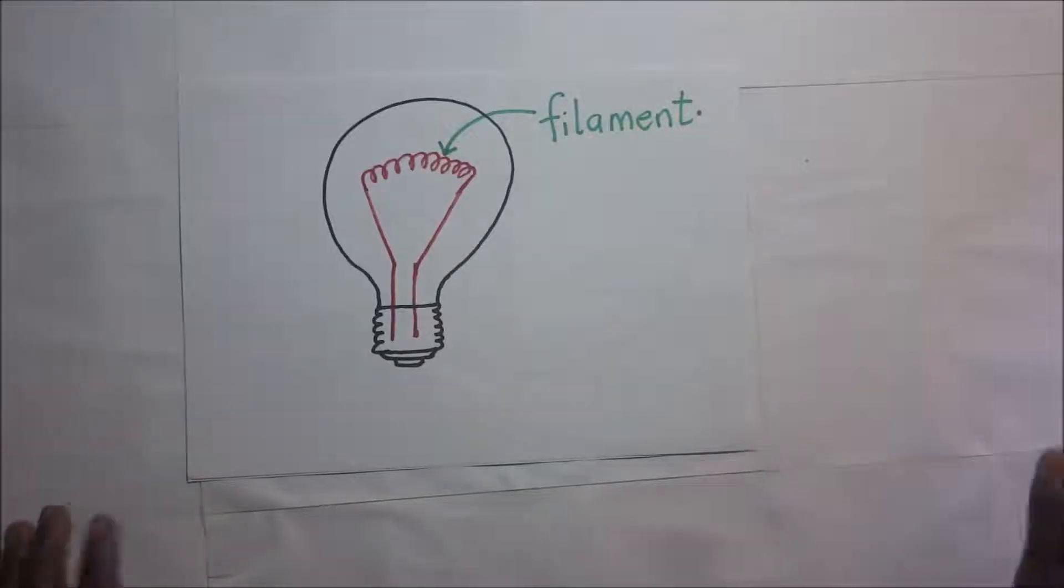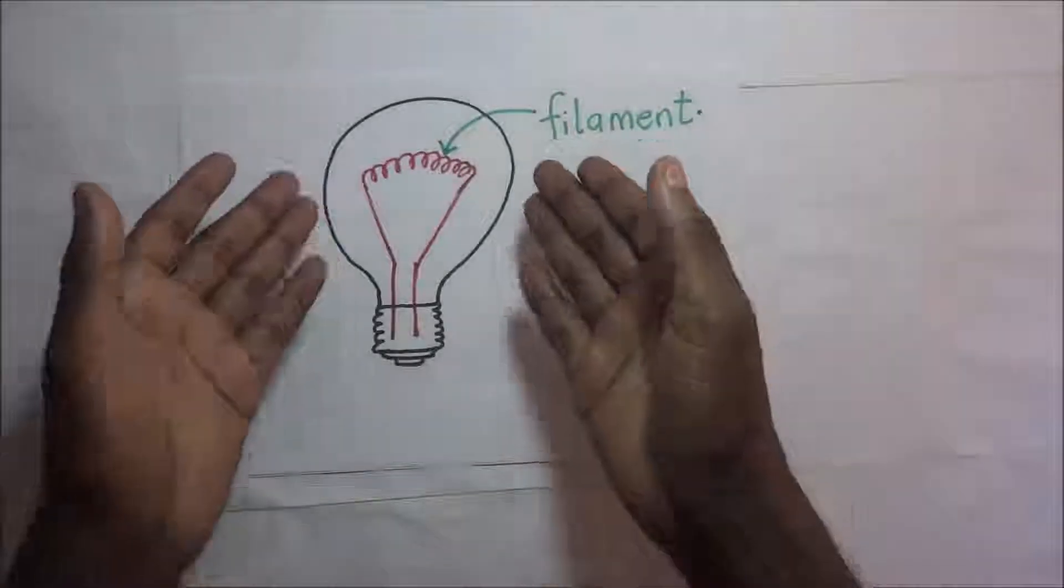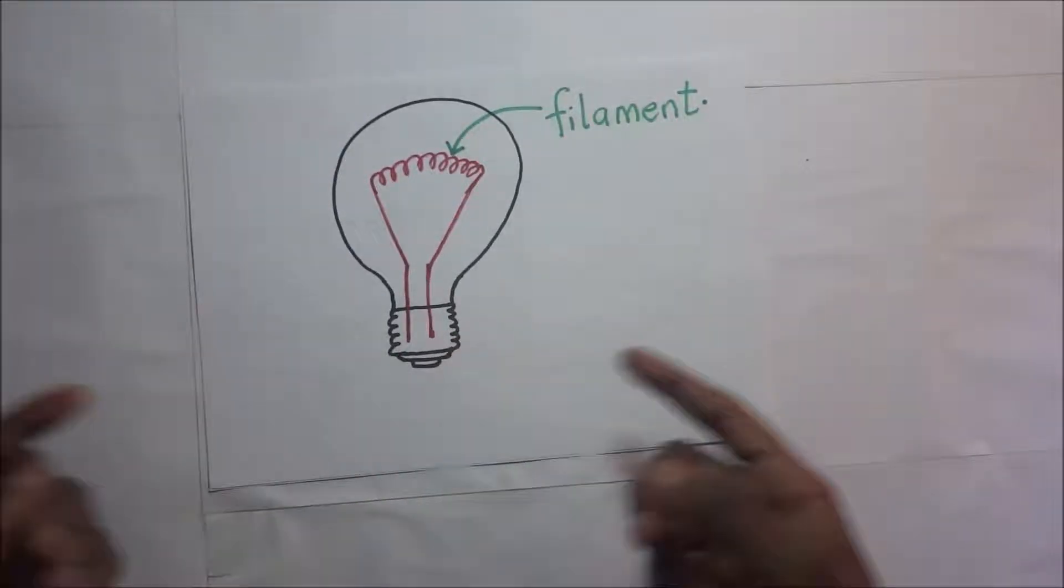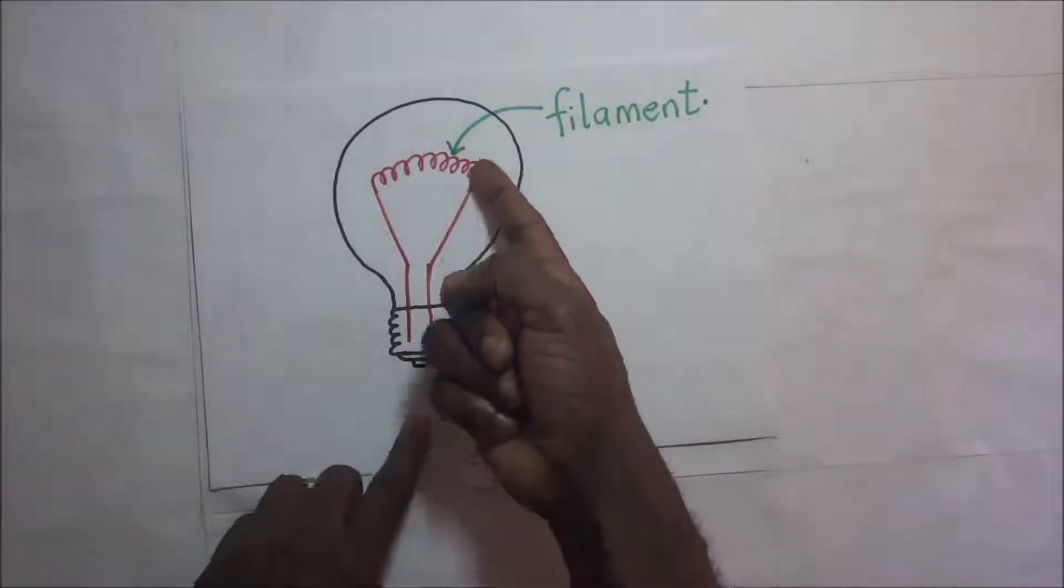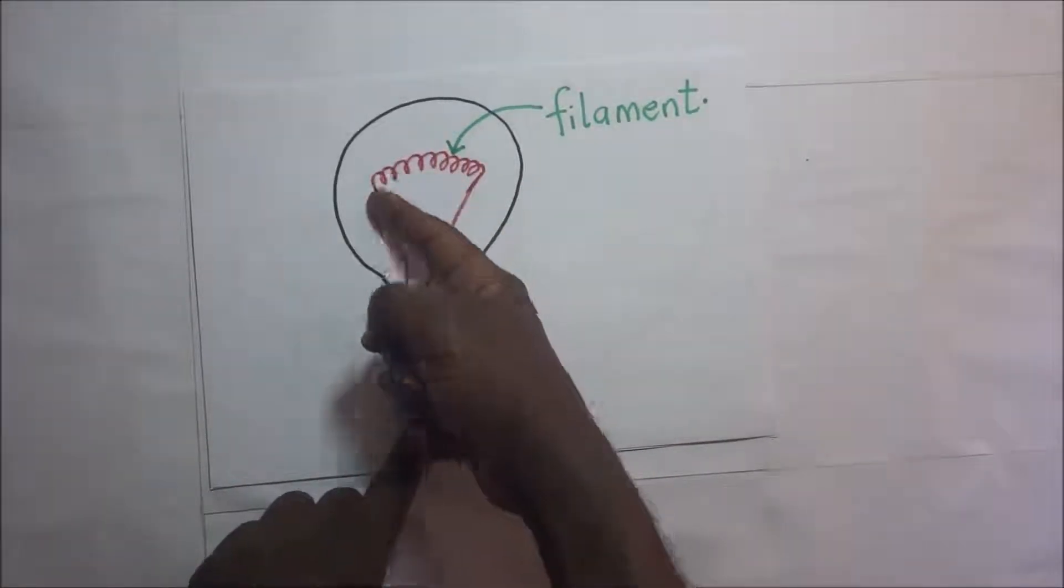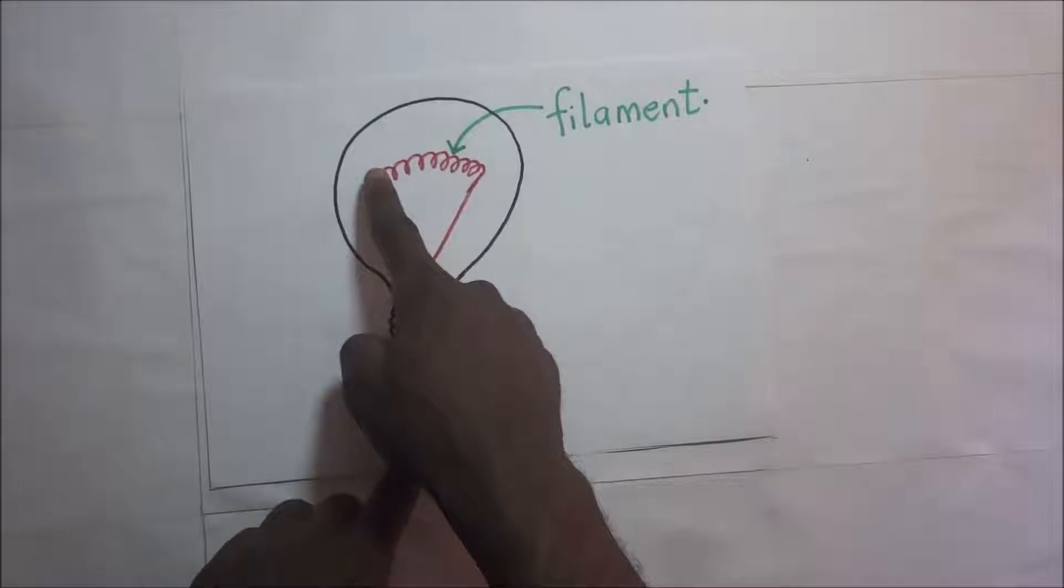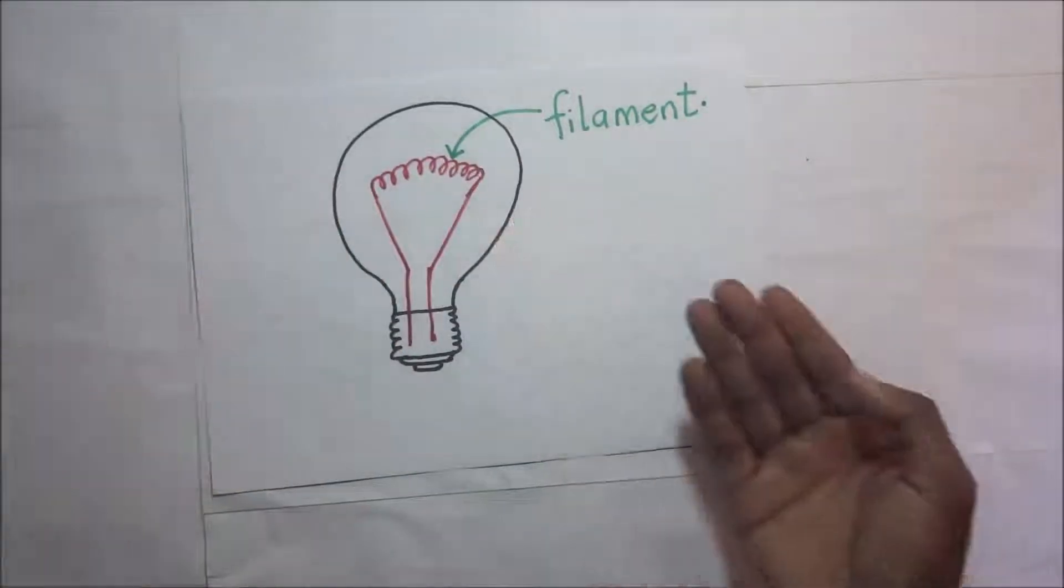When you look at a bulb, the part that produces light is called the filament. This is the diagram of a bulb, and if you've ever looked closely into a bulb, you will see a coiled wire inside. This coiled wire is what we are calling the filament. This is a filament bulb.